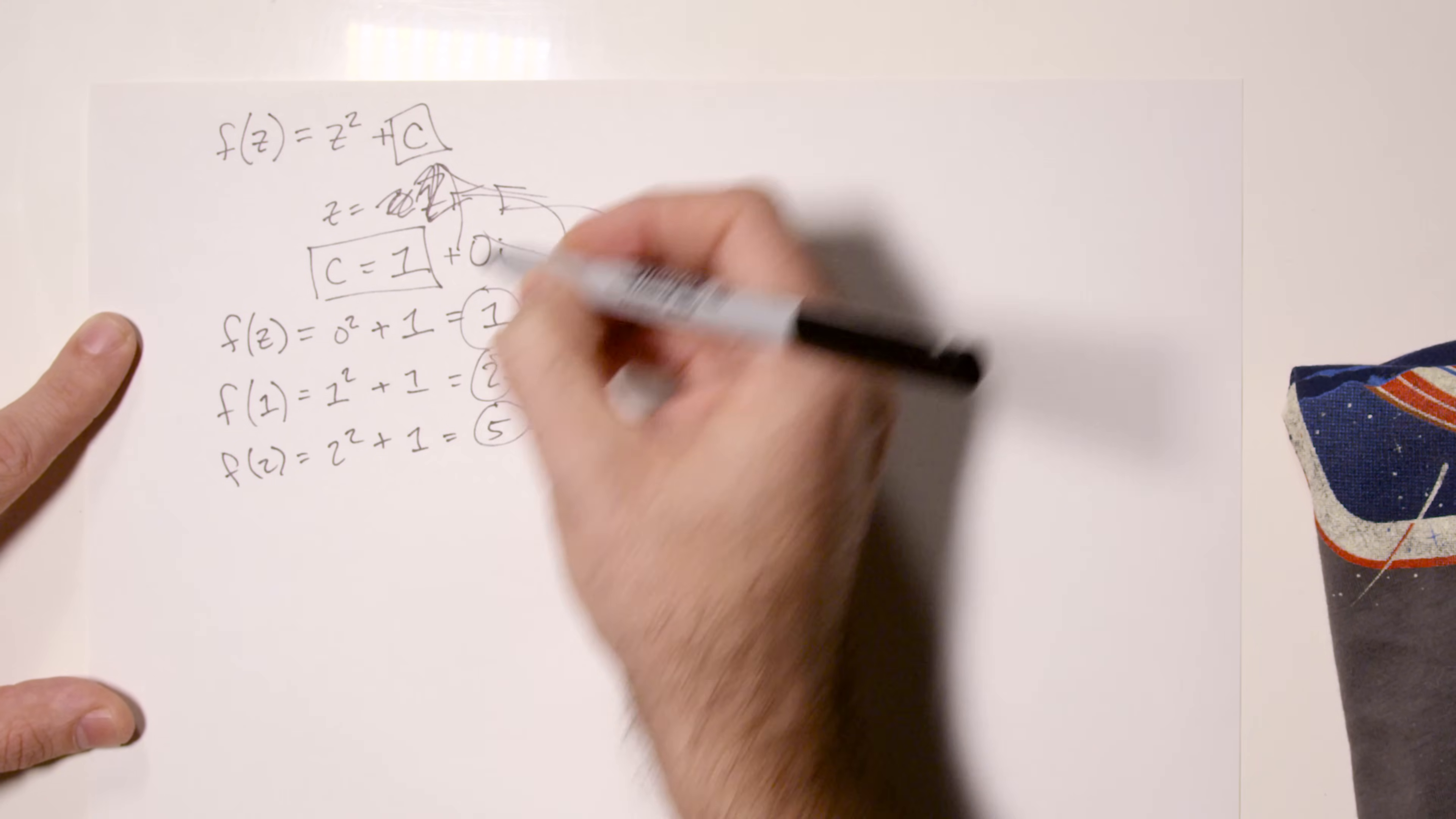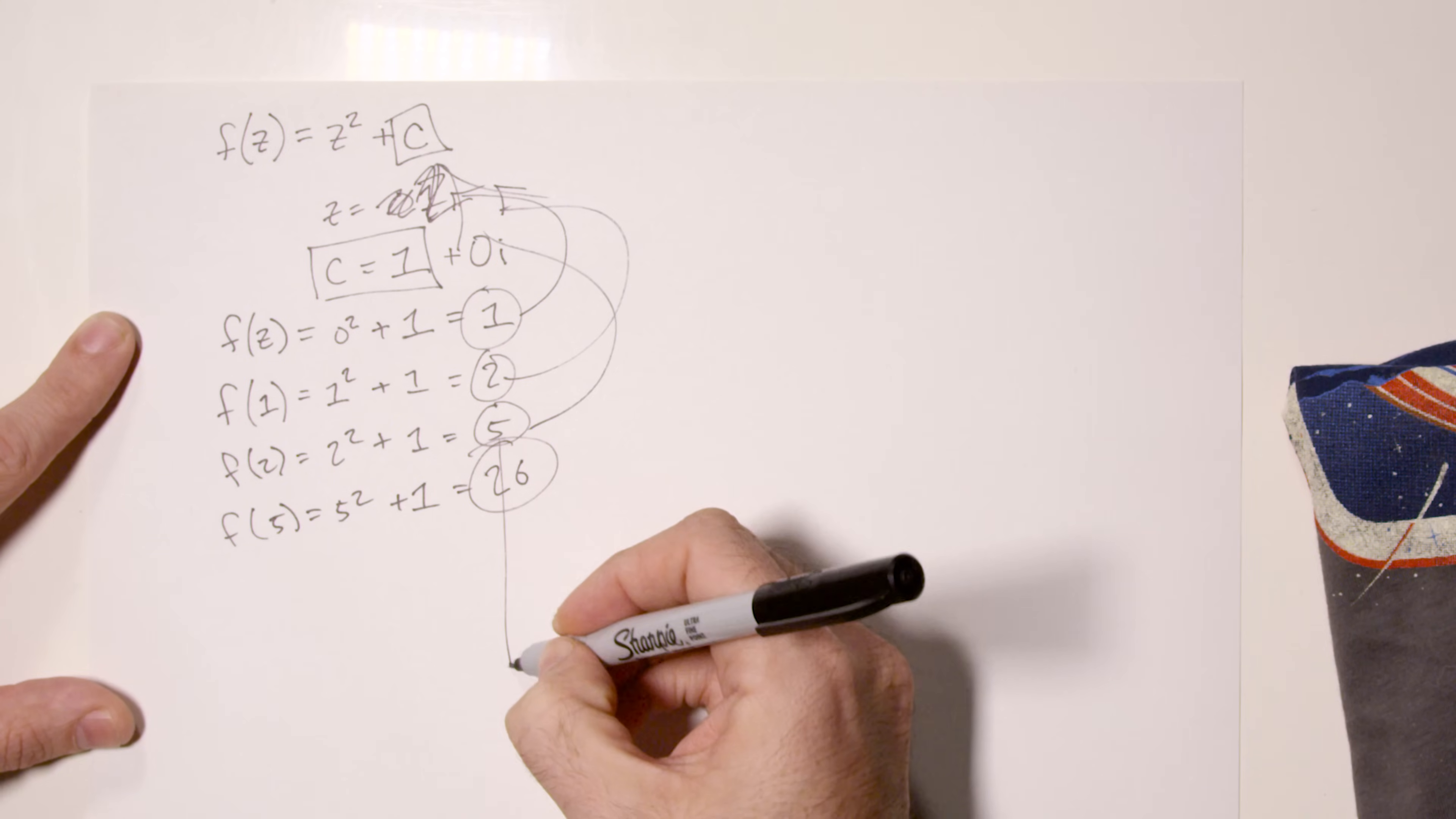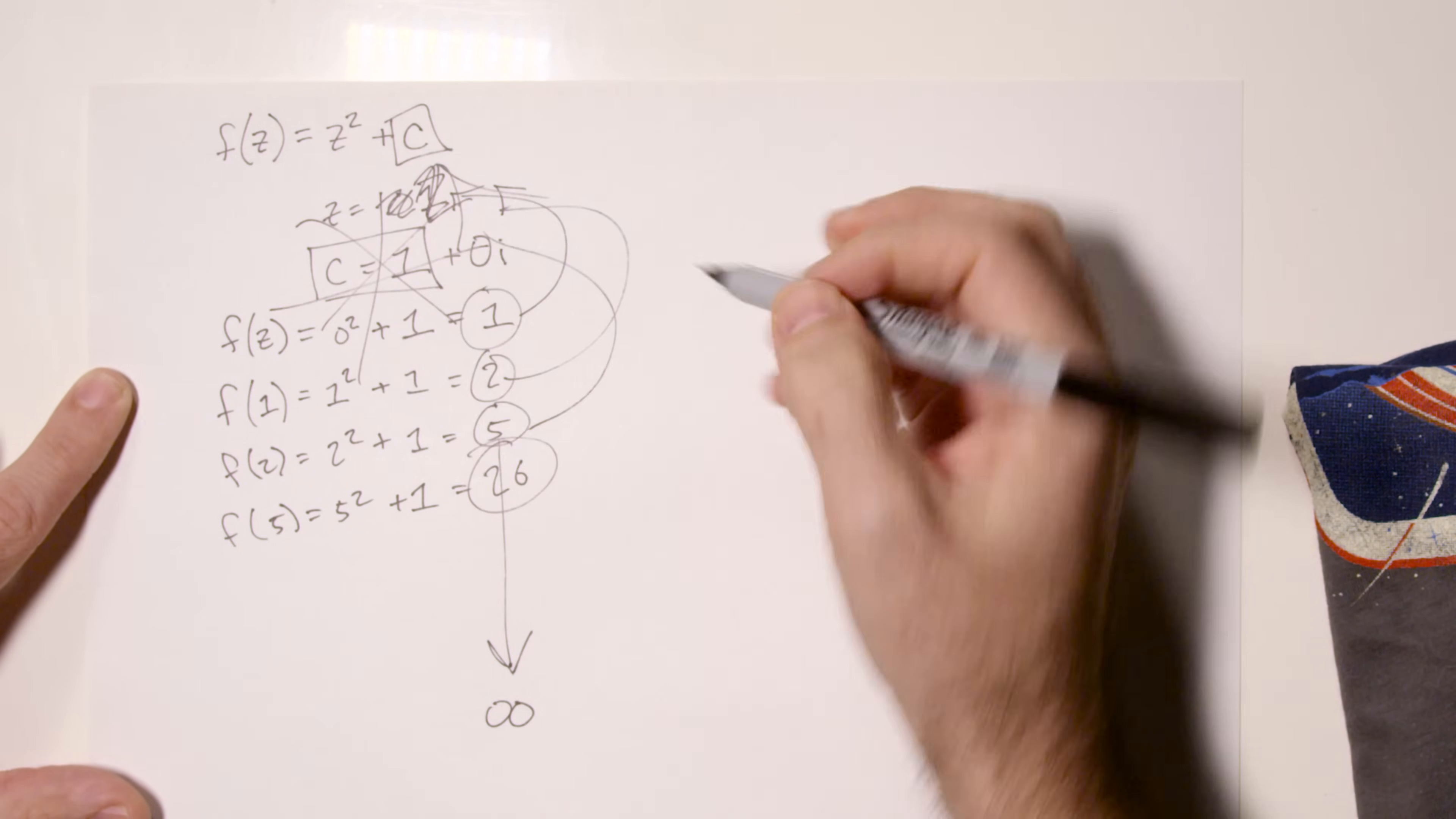Alright, let's plug this one back in. Now, z is equal to five. f of five equals five squared plus one. Five squared is 25, plus one is 26. My gosh, you guys, this is just going to keep getting bigger and bigger and bigger. It is going to grow without bound, and so one is not part of the Mandelbrot set.